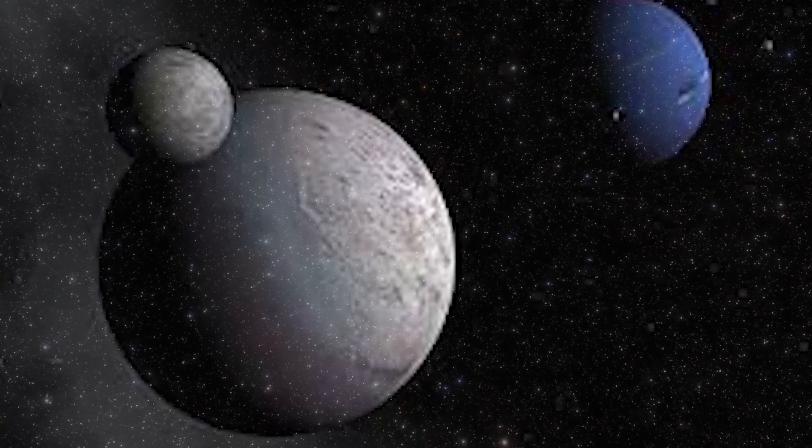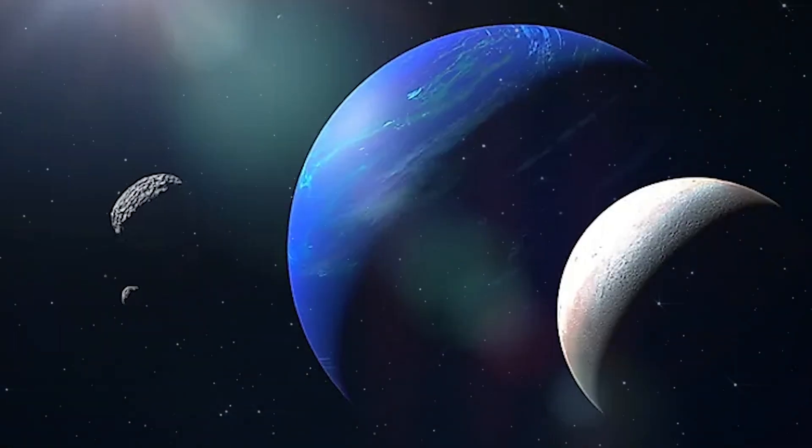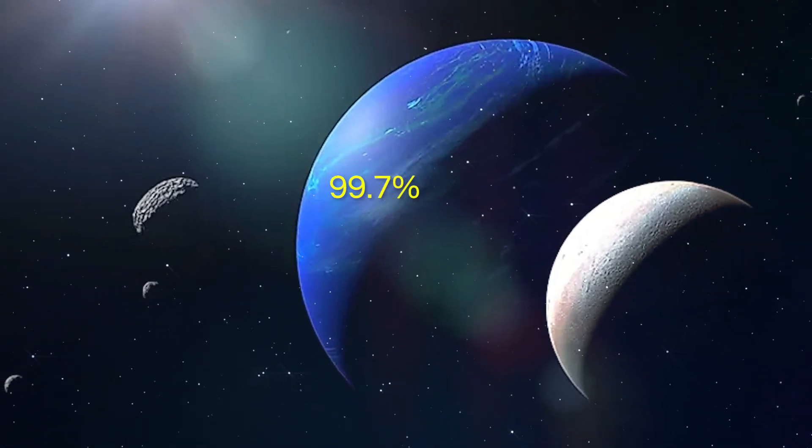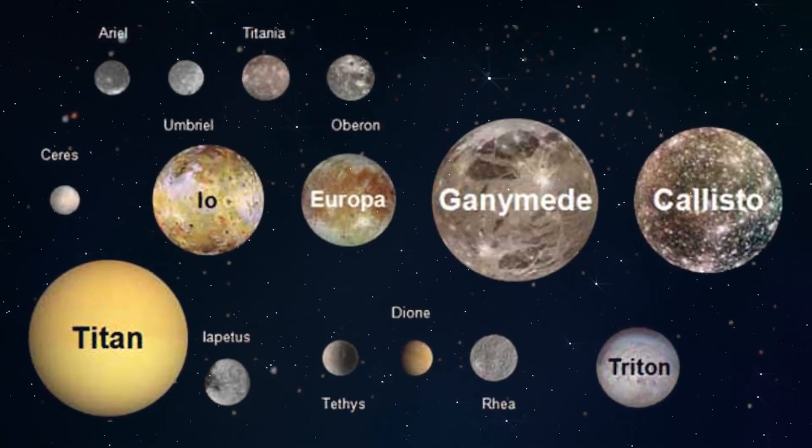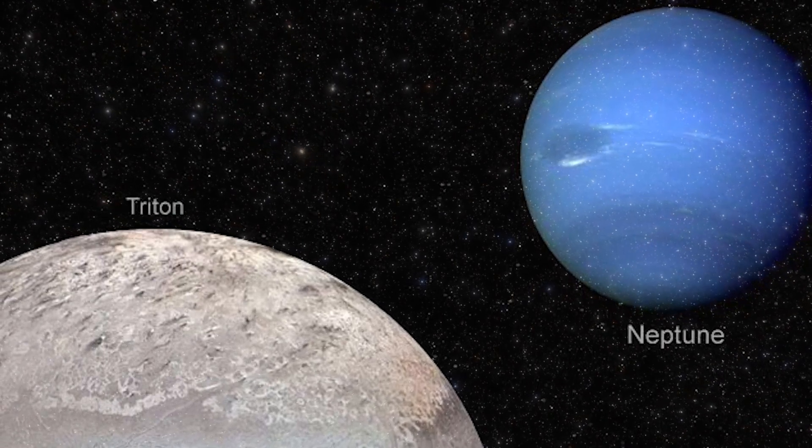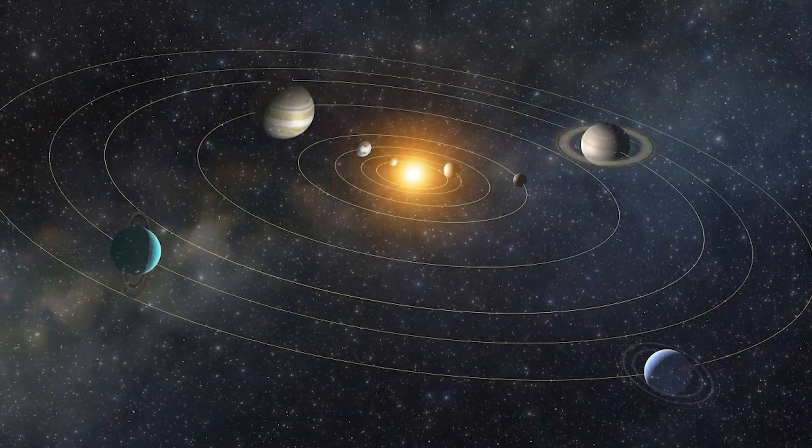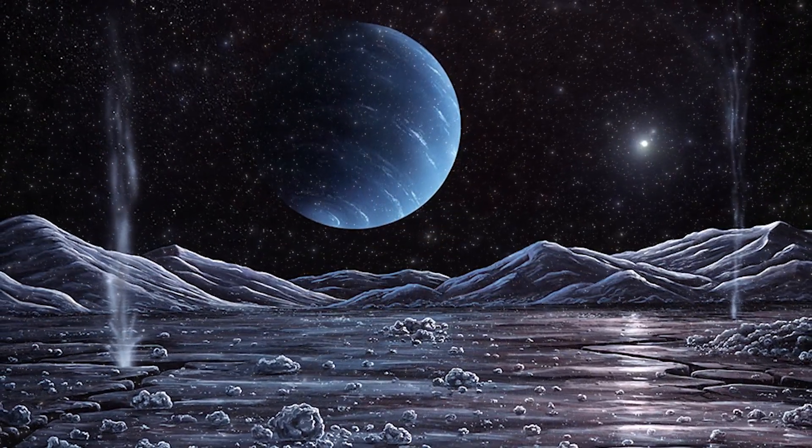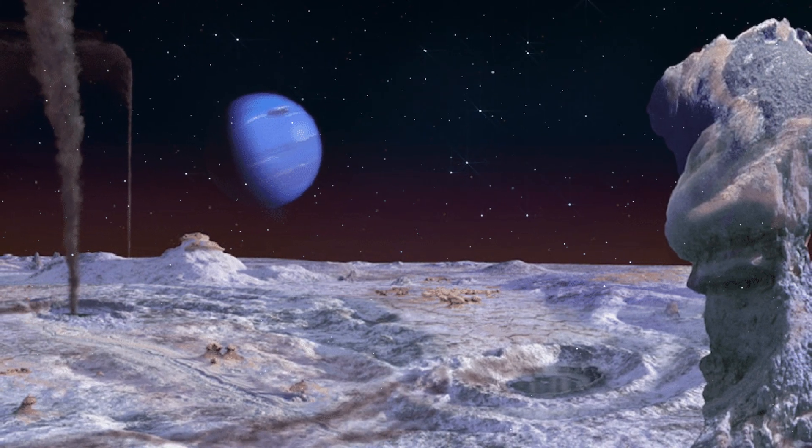Triton, Neptune's largest satellite, surpasses even the size of Pluto. With a diameter of 1680 miles, it accounts for 99.7% of the combined mass of all Neptune's moons. Notably, Triton holds the title of being the coldest geologically active object in our entire solar system, with surface temperatures plummeting to a bone-chilling minus 391 degrees Fahrenheit. This extreme cold arises from its icy, light-reflecting surface.